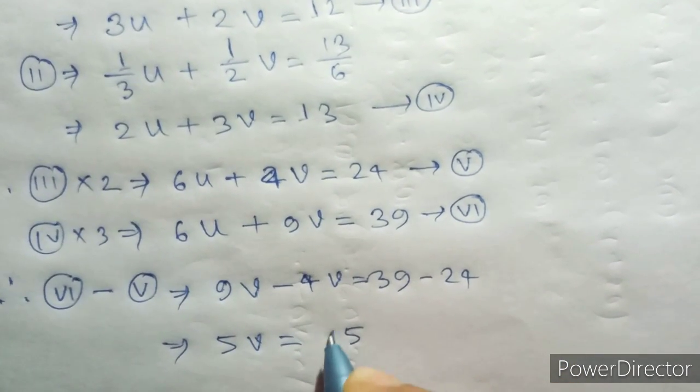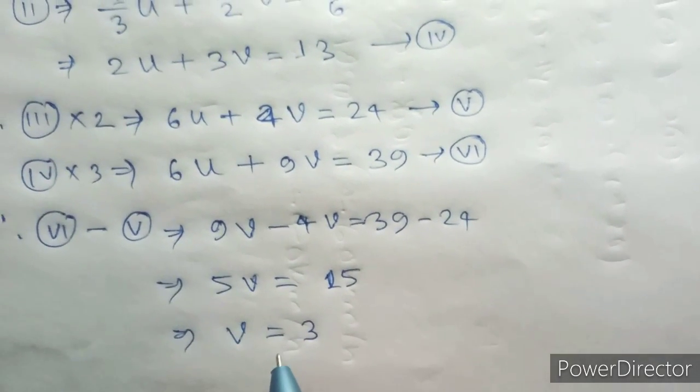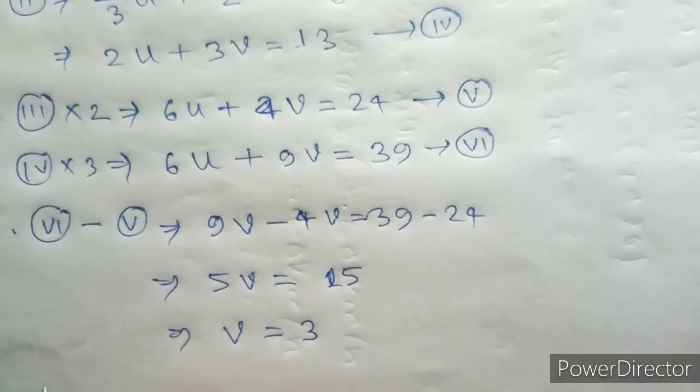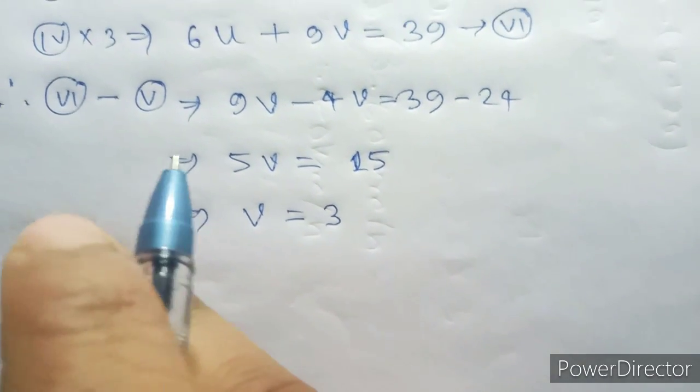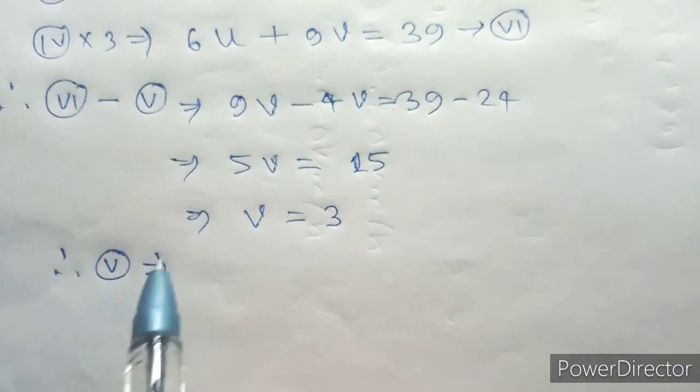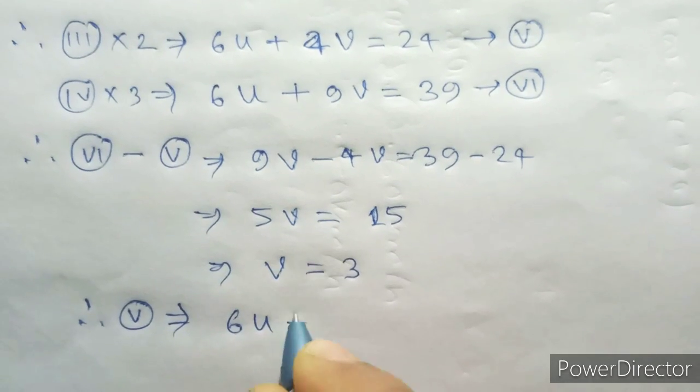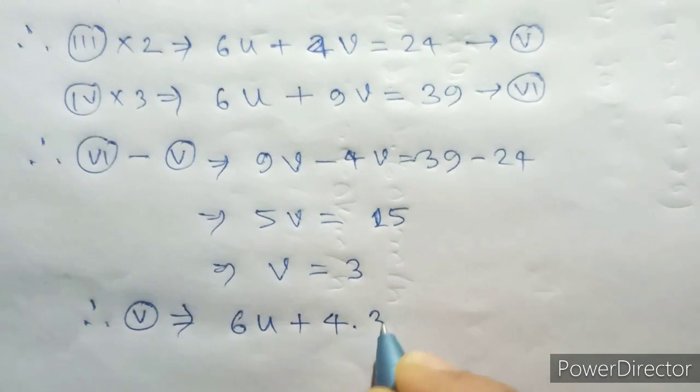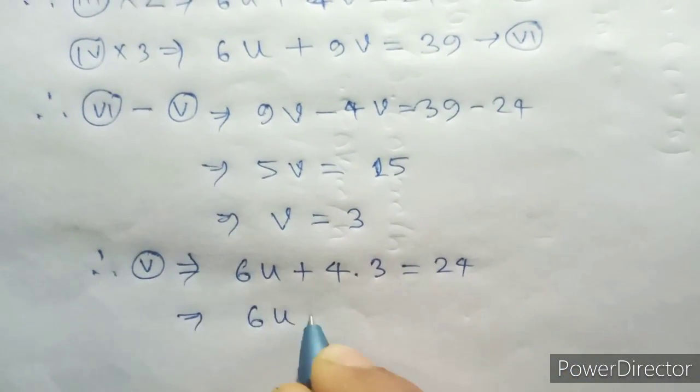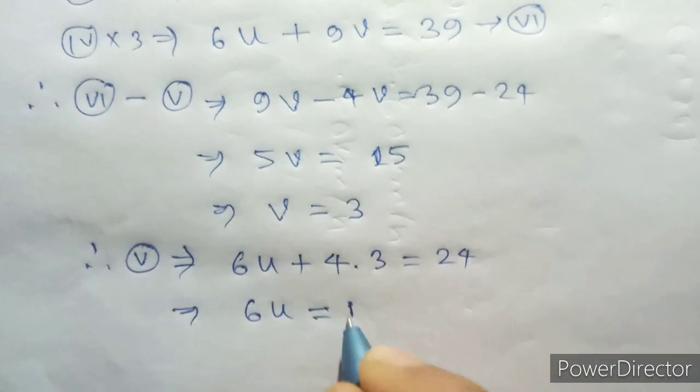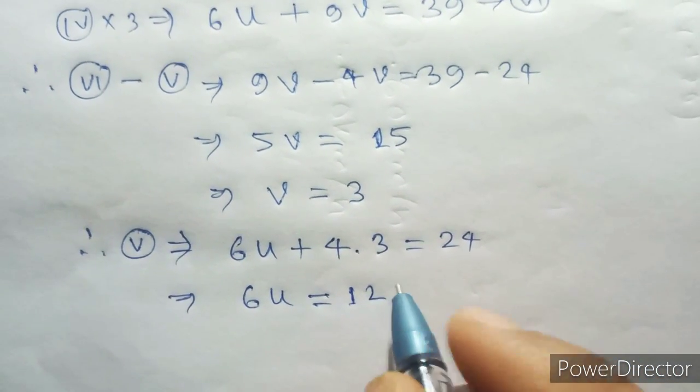So 5 V equal to 15. V equal to 3. Now 5 U plus 4 into 3, that's 4 into V, so 4 into 3 equal to 24. This implies 6 U equal to 24 minus 12, so 12. 12 implies U equal to 2.